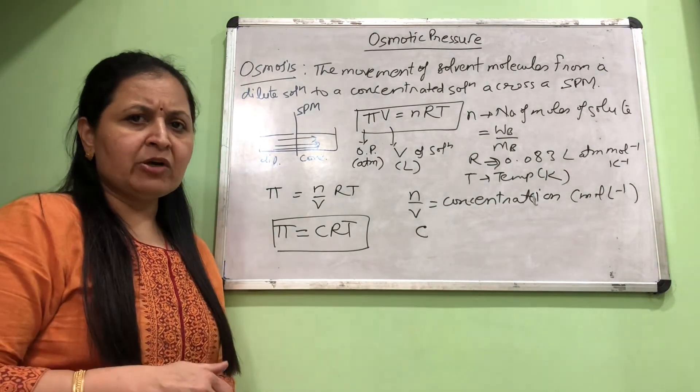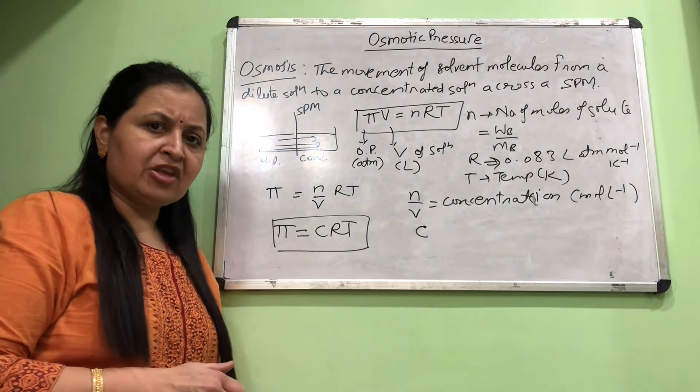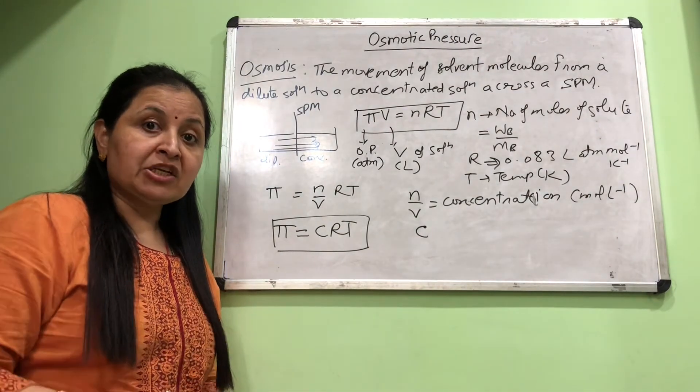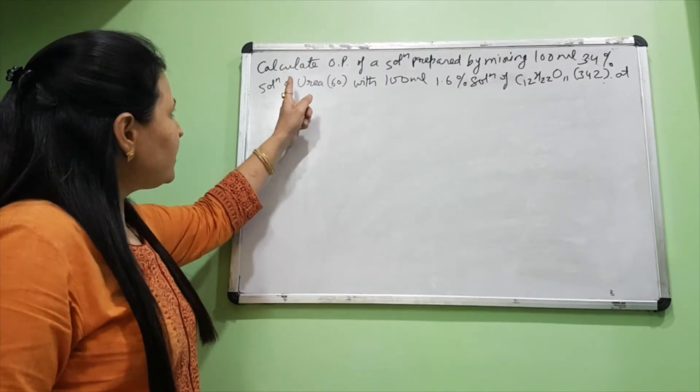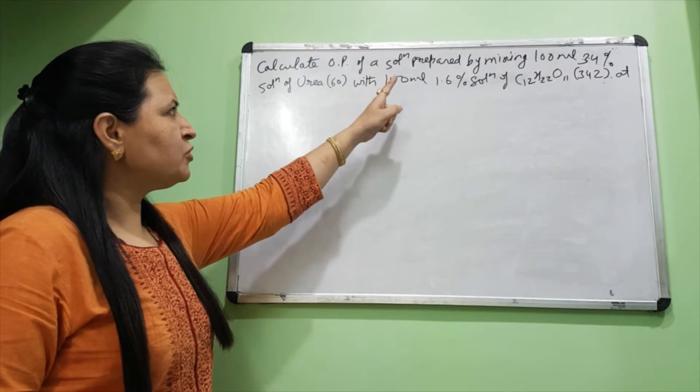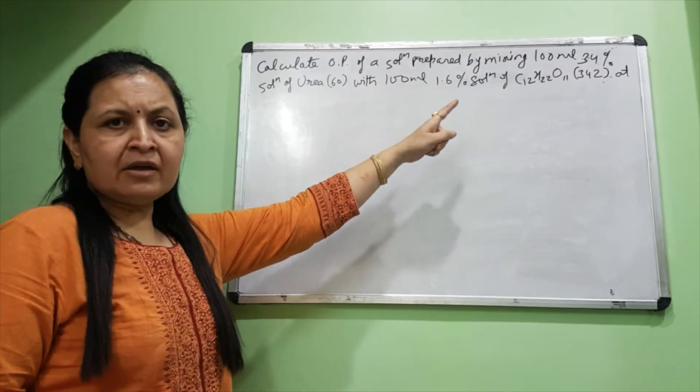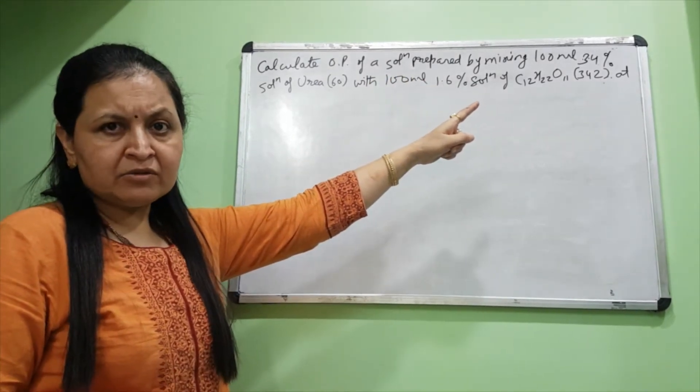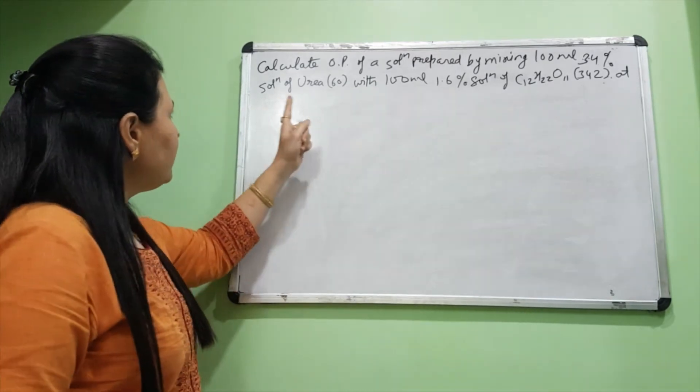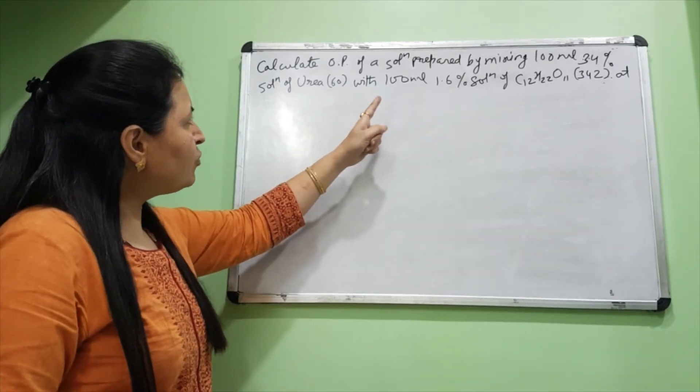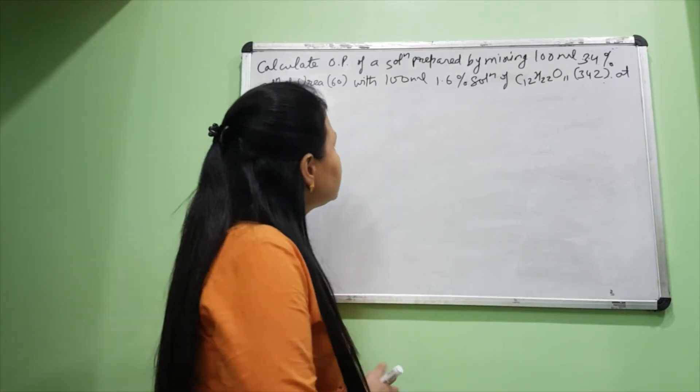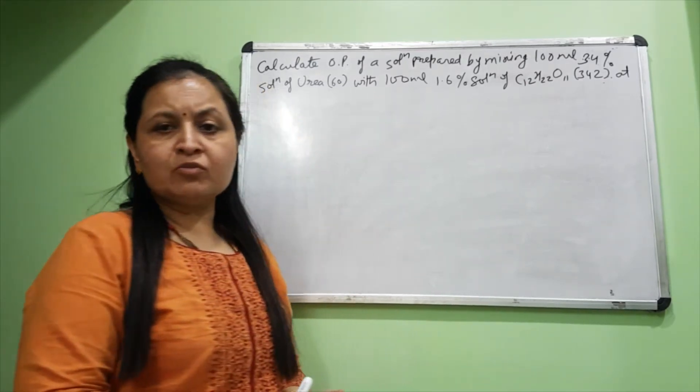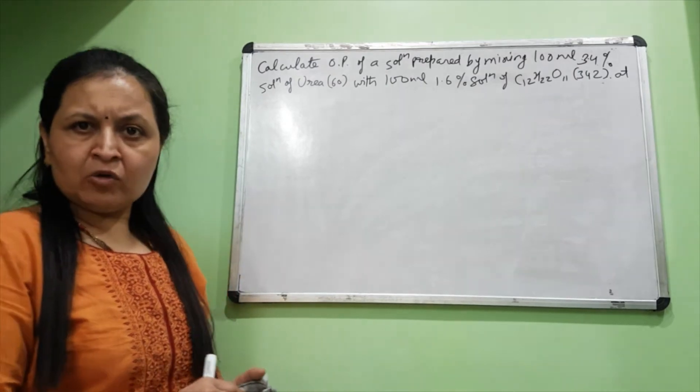As far as theory is concerned, osmotic pressure doesn't have much theory - it's just this much. But it has applications which we need to discuss. Let us solve one question based on the osmotic pressure formula. This question says: calculate the osmotic pressure of a solution obtained by mixing 100 ml of 3.4% urea (molar mass 60) with 100 ml solution of 1.6% sucrose (molar mass 342).